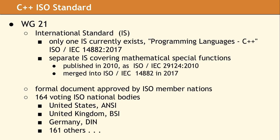An international standard is a formal document approved by the ISO member nations. Each member nation is represented by one particular entity, called a national body. For the United States, the national body is ANSI, the American National Standards Institute. The UK counterpart is the BSI, or British Standards Institution. Germany is represented by a body called DIN, the Deutsches Institut für Normung.